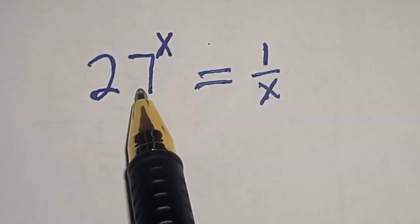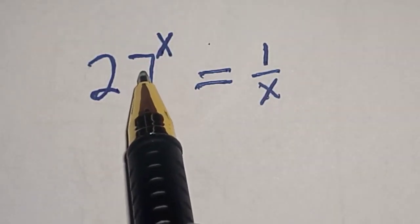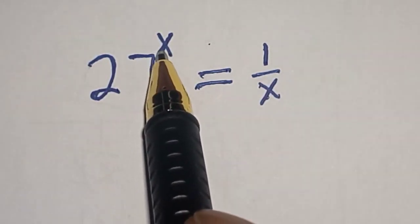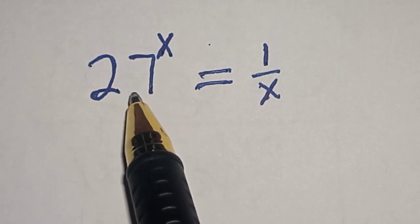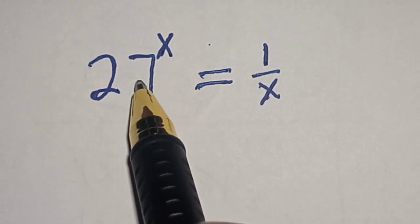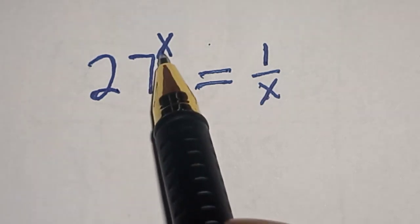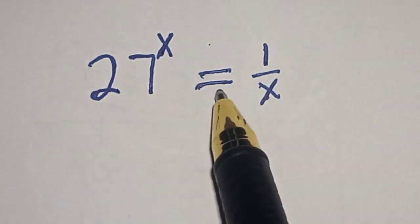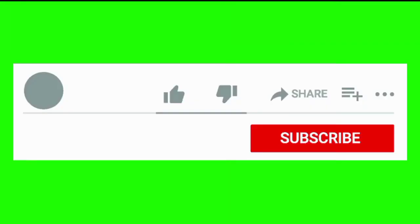Hello, welcome to Math Gist. In this class, we want to find the value of x from this nice Olympiad equation: 27 raised to power x is equal to 1 divided by x.